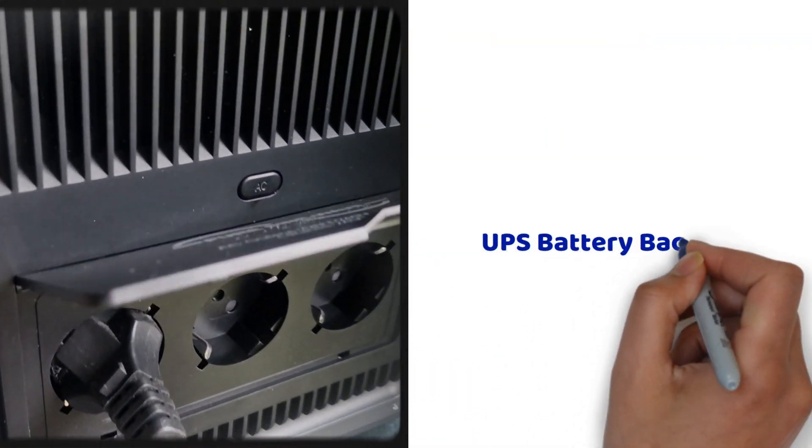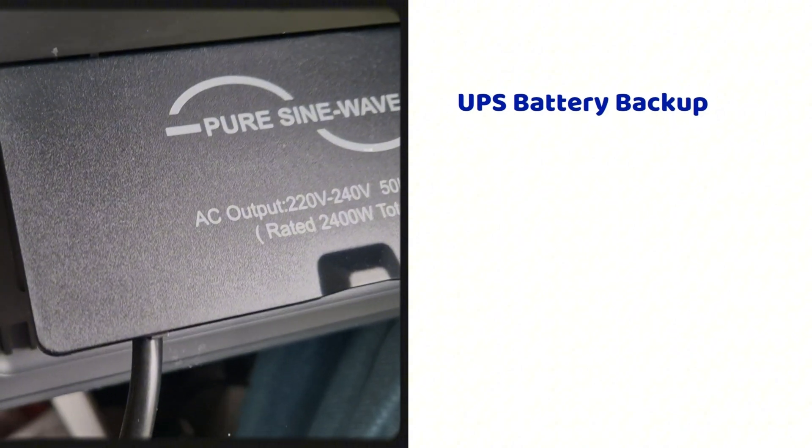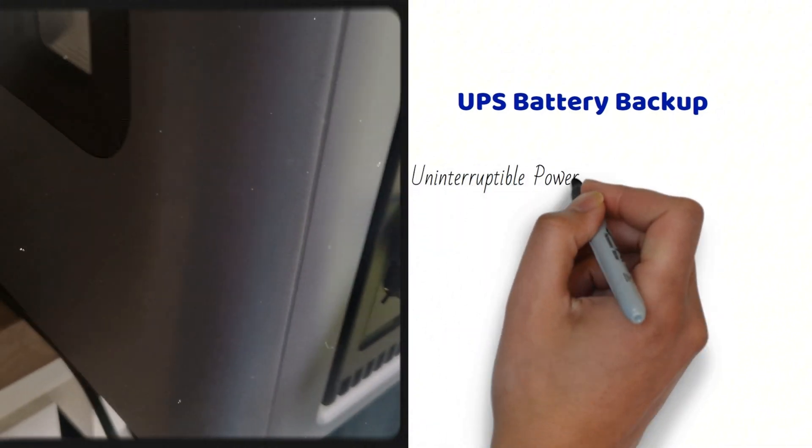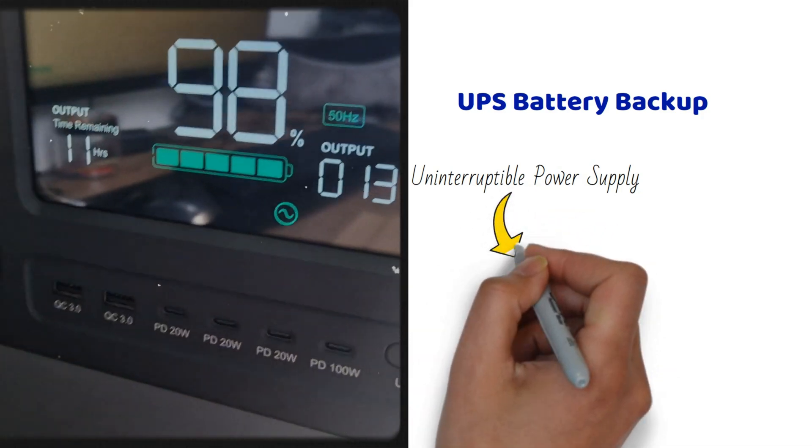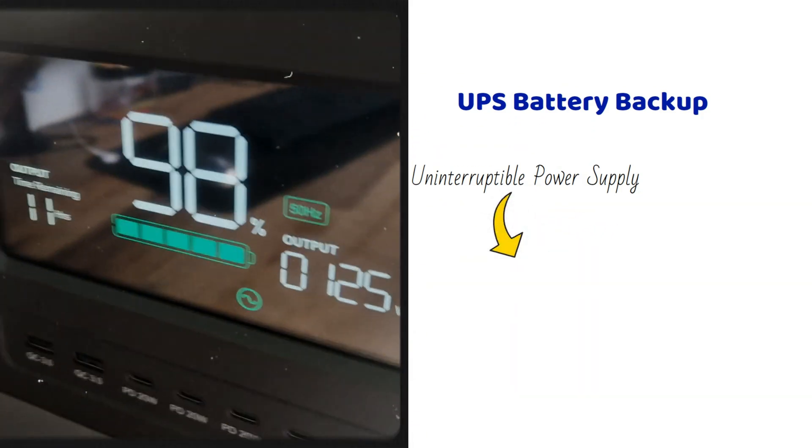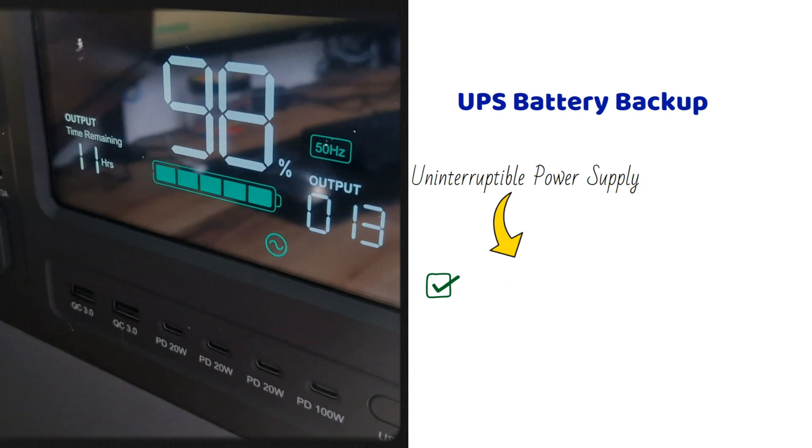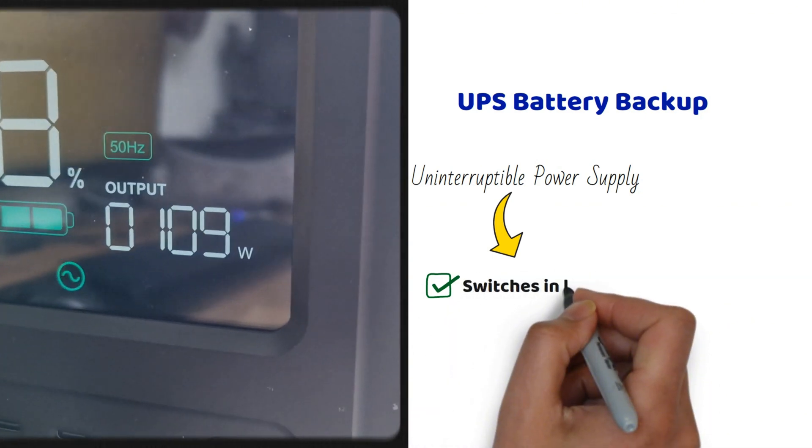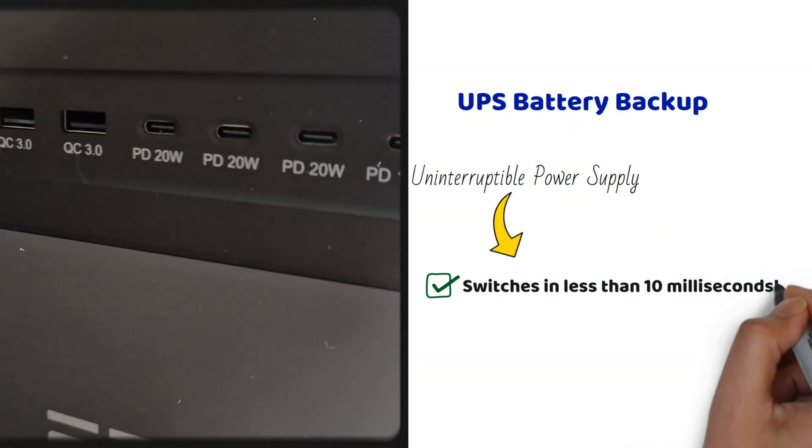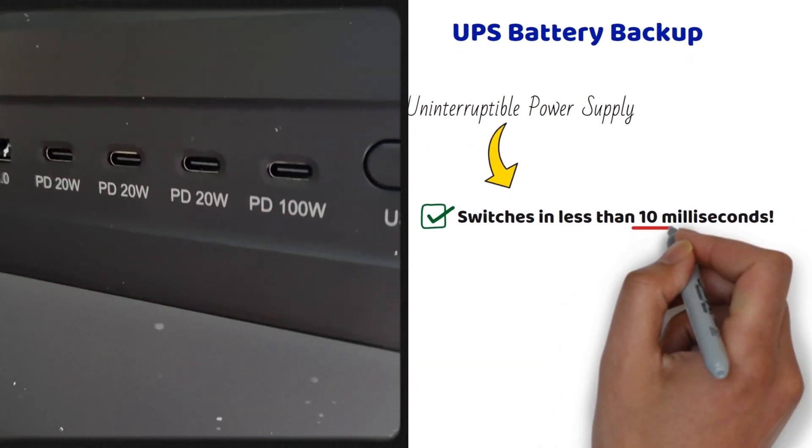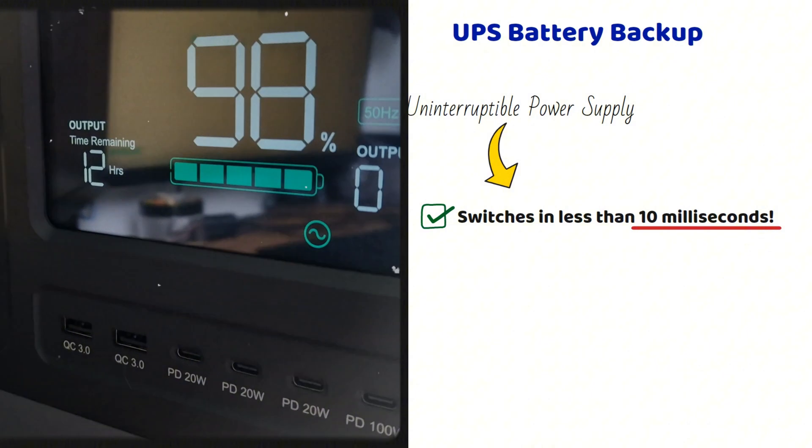What really stood out to me with this power station is the UPS battery backup option, uninterruptible power supply. Here's how it works. The UPS feature allows the station to provide continuous power in case of a blackout or fluctuations in the electrical grid. When the station is plugged into a wall outlet and detects a power outage, it automatically switches to battery power in less than 10 milliseconds, ensuring that connected devices continue running without interruption.